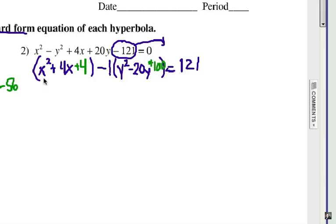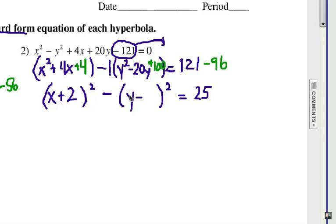Now the net result is that we added a 4, and we added a negative 100. A 4 and a negative 100, so that's negative 96 that we would add to the other side. That would be 25 on the right, and then we factor out our trinomials here. If we did it right, we should have a squared binomial, and it looks like we do. x plus 2 squared, and y minus 10 squared. And don't forget the last step. We need to divide everything by 25, because we want to have a 1 on the right-hand side of that equation.